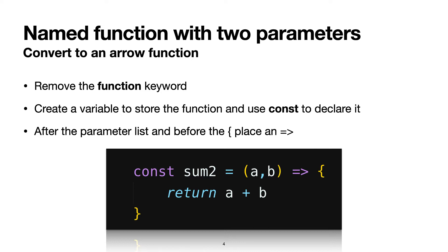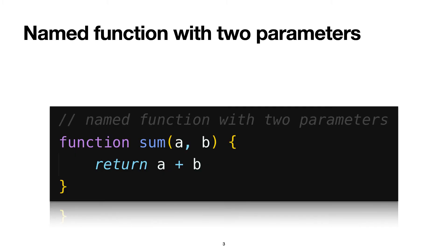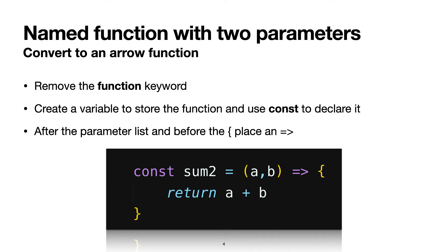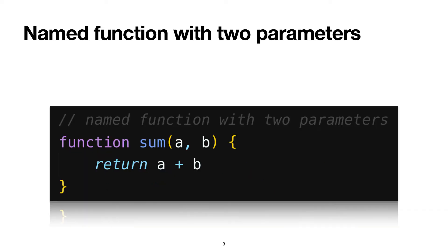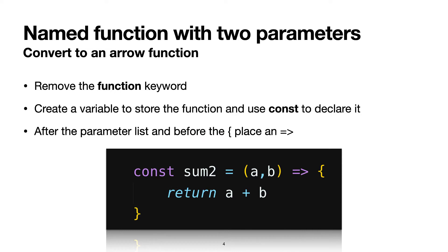So, remove the function keyword. Remember it said function sum(a, b)? So let's remove the function keyword — look on the screen, it's not there anymore. The next thing we're going to do is create a variable to store the function, and we're going to use const to declare it. So notice what we have so far: const, and then sum2 — I named it different just so it's a different function. So it's sum, and this is sum version two. Equals, and then you have a, b. See the a, b in the parentheses?